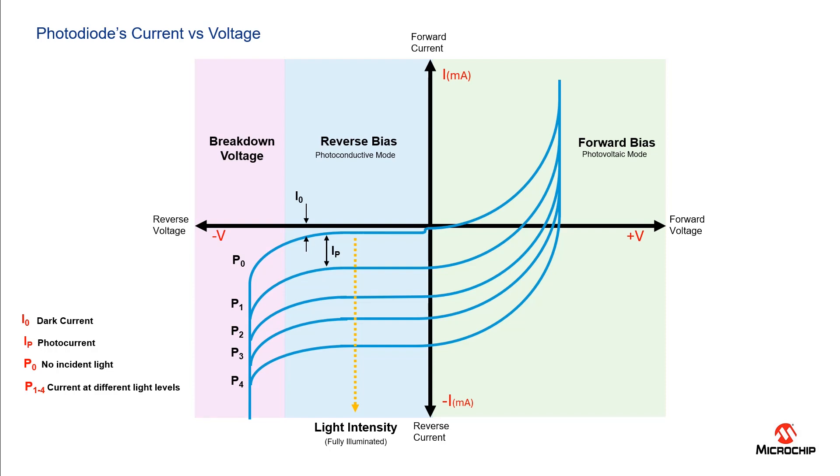On the other hand the non-linearity of the forward bias section can also be seen in green. As the forward bias increases the regular diode current increases exponentially consuming the negative photocurrent and making the external current become positive when the bias voltage is high enough.